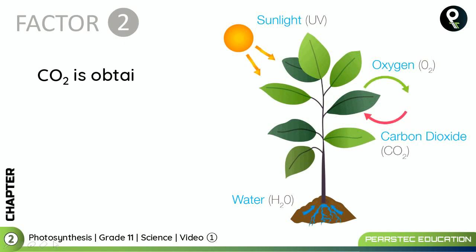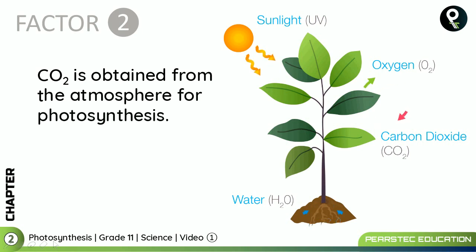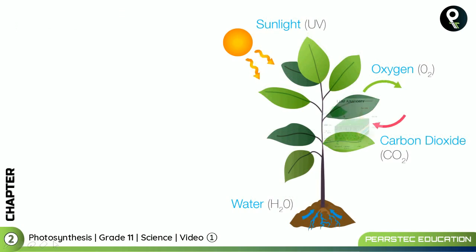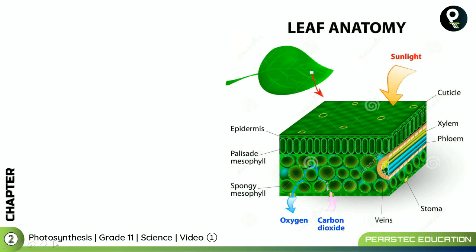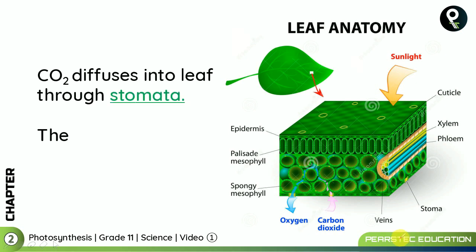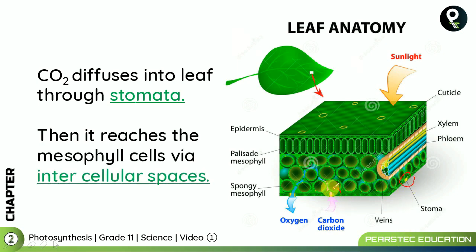Factor number two is carbon dioxide. Carbon dioxide is obtained from the atmosphere for photosynthesis. Looking at the leaf anatomy carefully, carbon dioxide diffuses into the leaf through stomata — small pore-like openings in the leaf. It then reaches the mesophyll cells through the intercellular spaces. Both water and carbon dioxide thus arrive at the mesophyll cells where photosynthesis takes place.